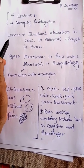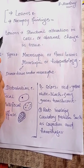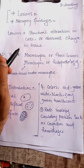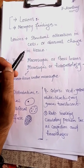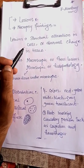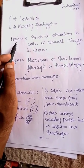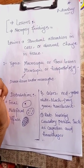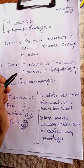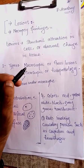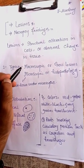Lesions - whenever we do necropsy findings, if a structure becomes abnormal, we call it a change in a cell, organ, or tissue. Something like a change from normal is called a lesion. Lesions are of two types: one is macroscopic or gross lesions, and the other is microscopic or histopathological lesions.